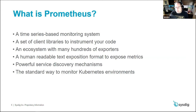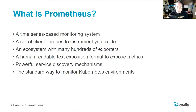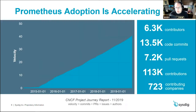Prometheus exposes metrics in a human-readable format so you can use PromQL, the query language for Prometheus, to look at those and have them make sense. It also allows for service discovery mechanisms so you can more easily find things as they're deployed in automated environments. It's worth noting that it's the standard way to monitor Kubernetes environments — the two really go hand in hand. Prometheus is the second most popular project at the CNCF, after Kubernetes itself.